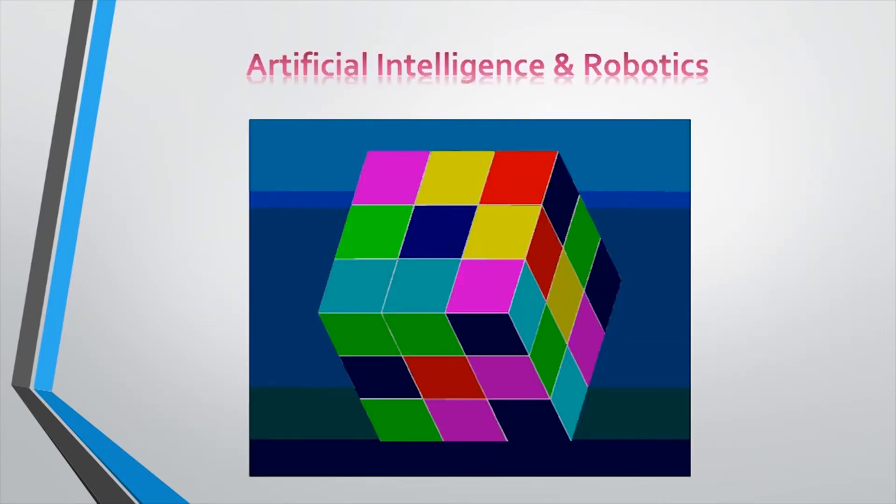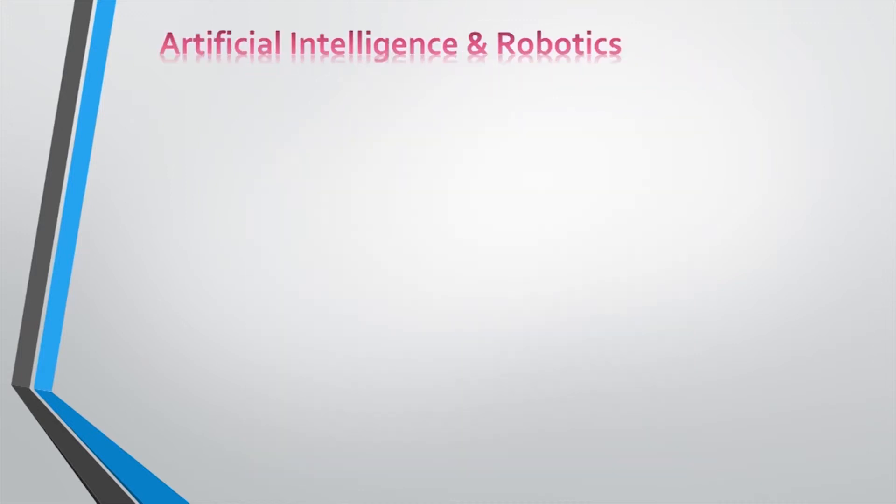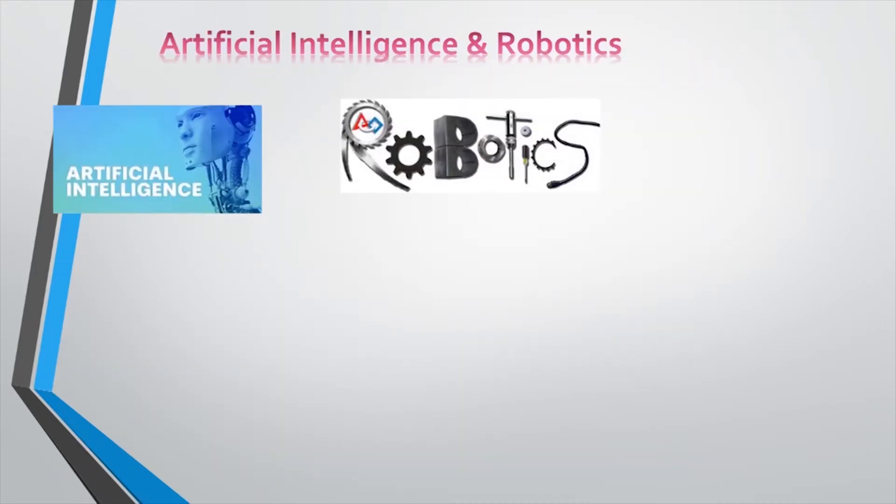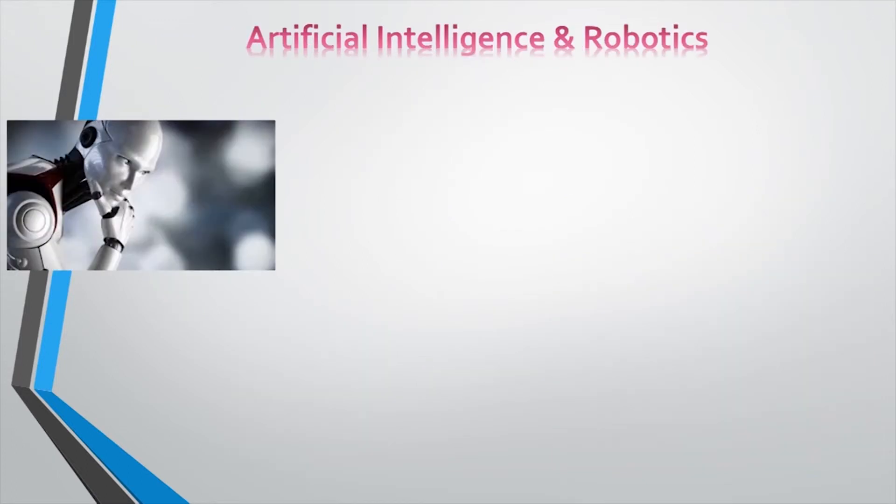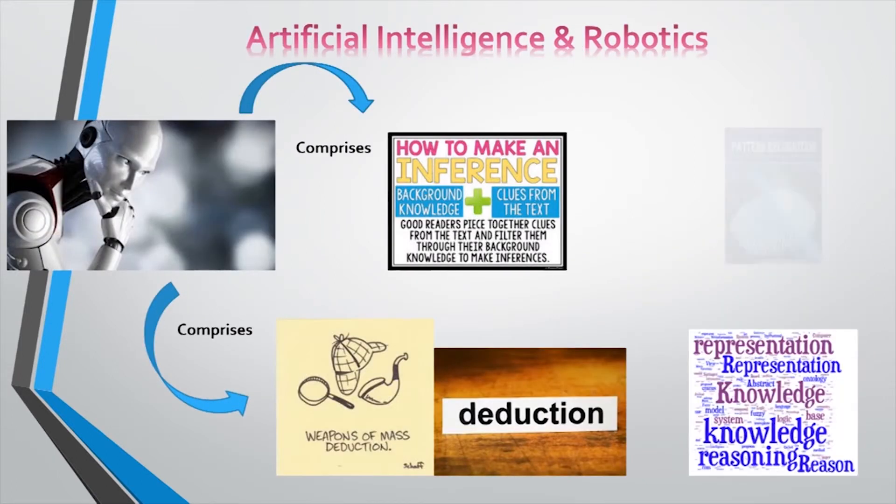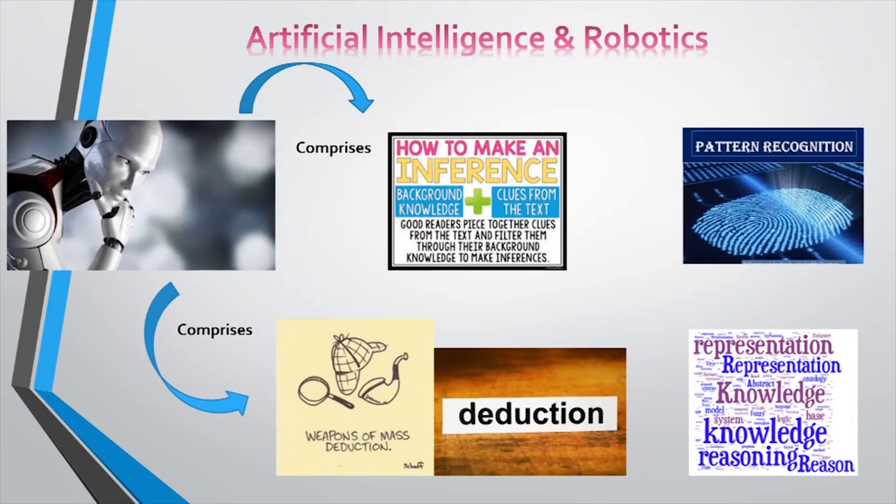Number 4. Artificial intelligence and robotics. Basic models of behavior and the building of virtual or actual machines to simulate animal and human behavior are found here. Inference, deduction, pattern recognition, and knowledge representation are the major components.